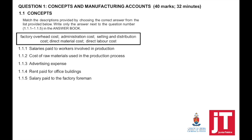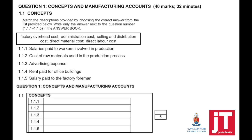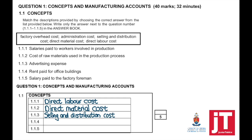For 1.1.1, salaries paid to workers involved in the production — that is direct labor cost. If they're directly involved in the process of making, it goes to direct labor cost. The cost of raw materials used in the production process is direct material cost. Advertising expense forms part of the selling and distribution cost — it will never form part of your factory or administration cost.